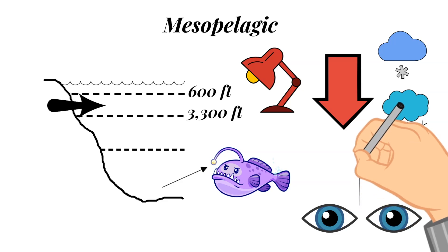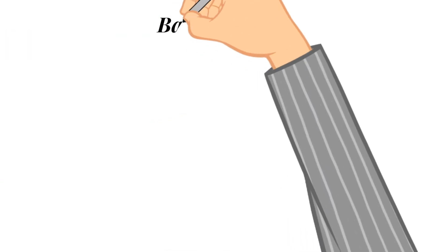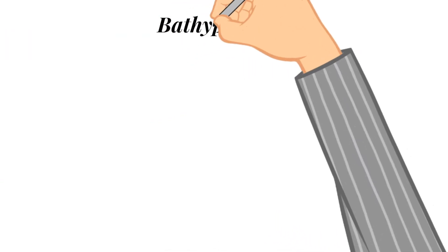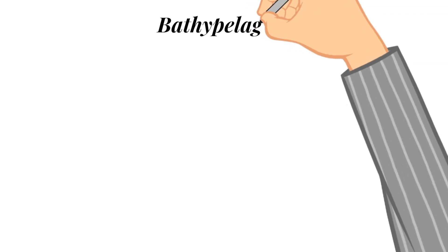And the reason scientists think this happens is that they can then see the shadows of other animals or even food against the dim light above. Next up, let's talk about the bathopelagic zone.